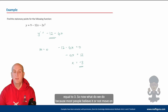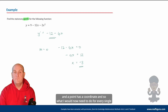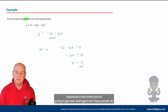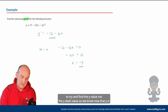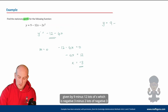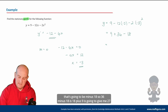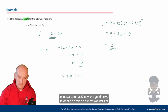So x equals negative 3. Now most people move on — but VCE gets very upset because a stationary point is a point and a point has a coordinate. You must not substitute back into the derivative — that gives you zero and too many people do that. You substitute x = -3 back into the original function. So y = 9 minus 12(-3) minus 2(-3)² = 9 + 36 - 18 = 27. Therefore my stationary point has the coordinate (-3, 27).